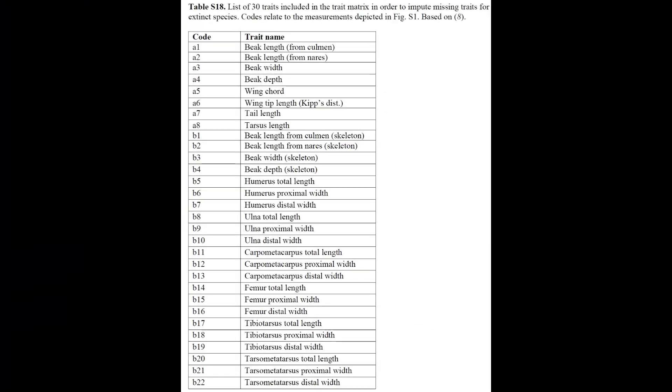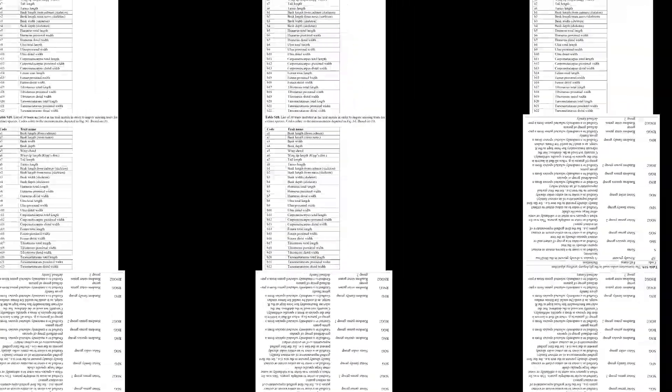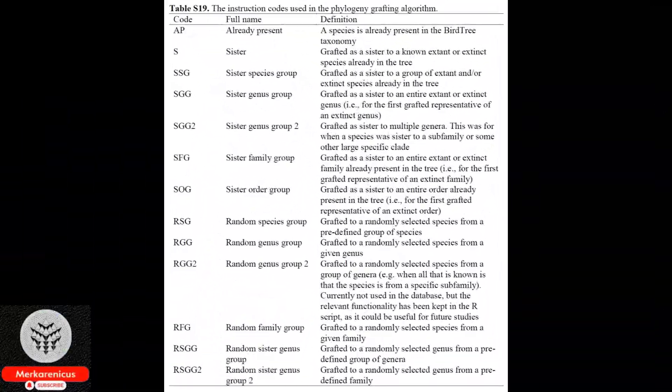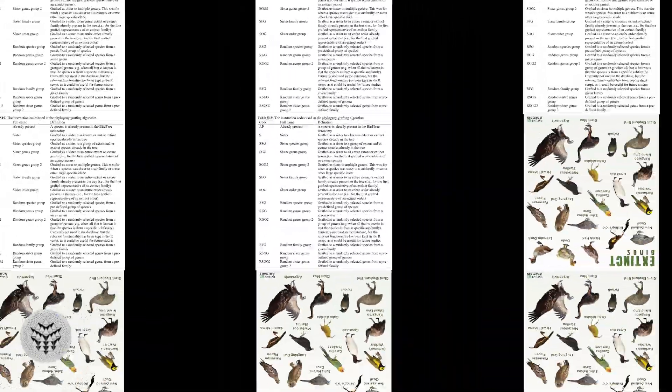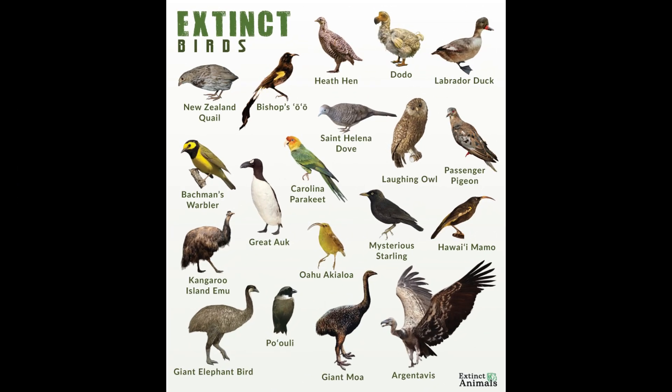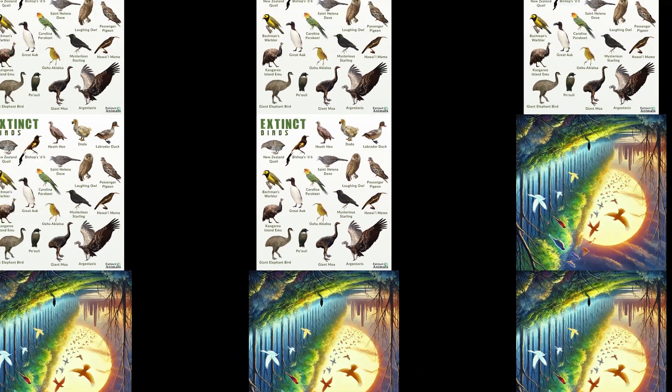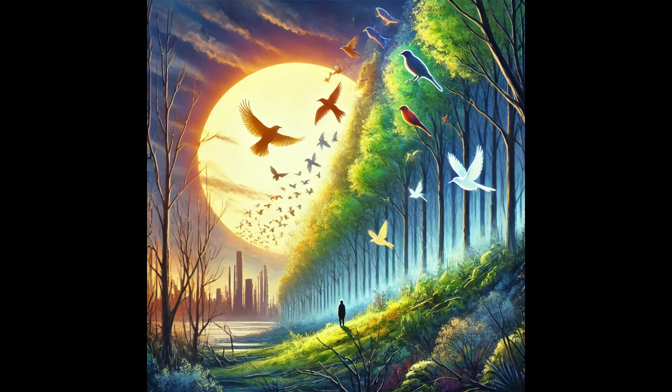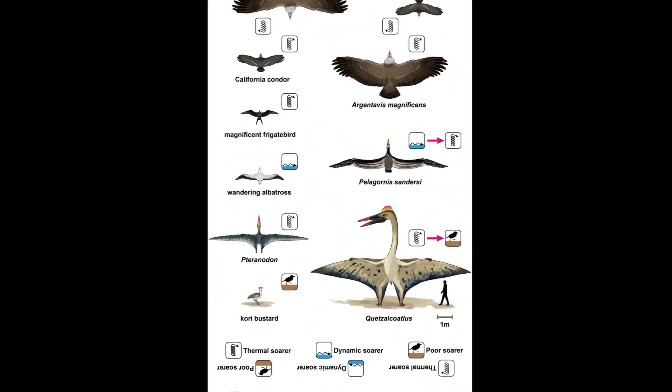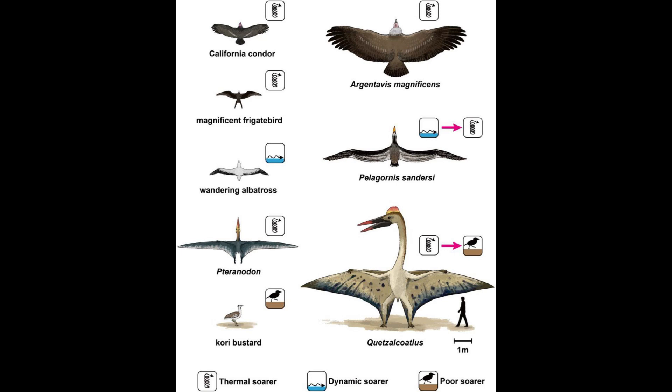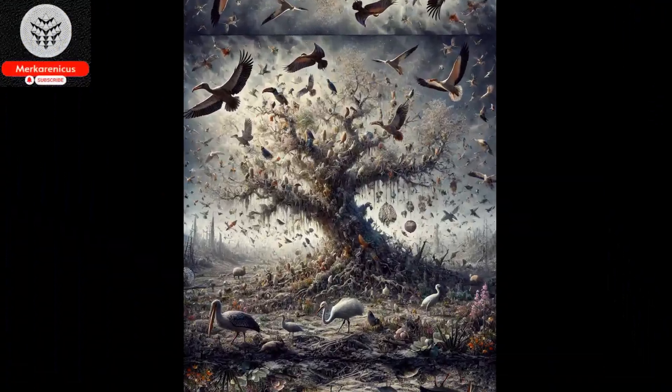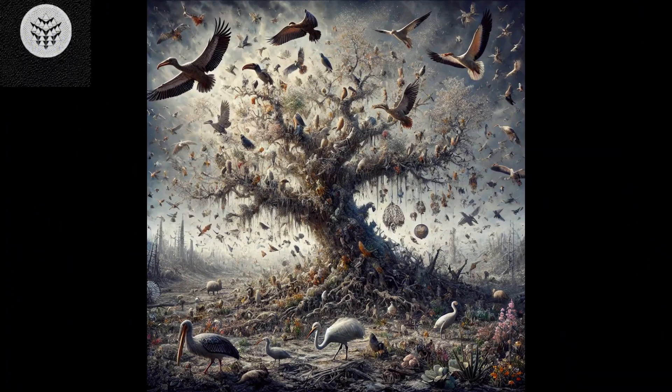Beyond functional diversity, each species embodies a unique evolutionary history. Thus, the extinction of a species equates to severing a branch from the tree of life, resulting in the loss of all the phylogenetic diversity linked to it. The findings indicate that anthropogenic bird extinctions have led to a loss of around 3 billion years of distinct evolutionary history and a reduction of 7% in global avian functional diversity, figures that exceed expectations based on the number of extinctions recorded.